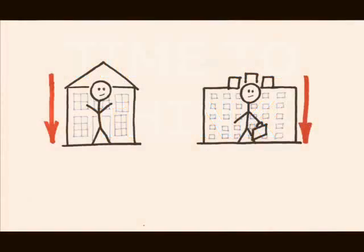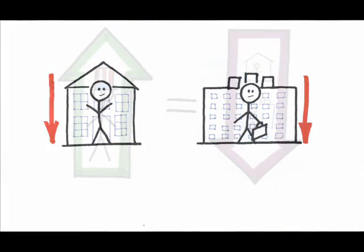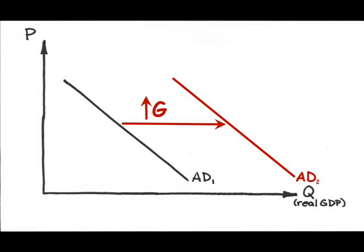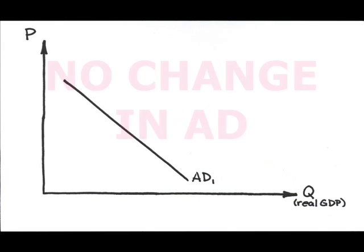It is possible to see complete crowding out, in which case the government spending is completely offset by reductions in household and investment spending. If this is the case, then in the end, there's no net increase in spending.